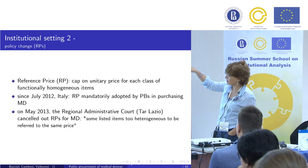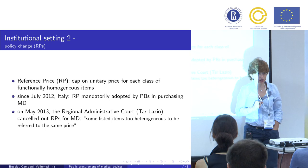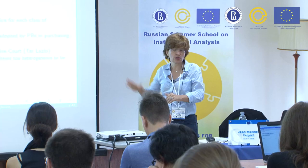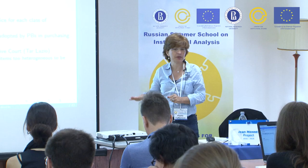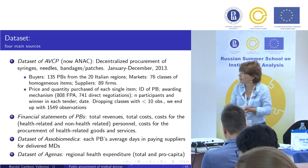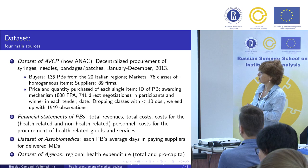The reference price policy is a cap on the unitary price for each class of functionally homogeneous items. Since the government observed large differences in prices, they put a cap so that every syringe everywhere in Italy could not cost more than a fixed amount to any public buyer. Our dataset comes from the Italian public procurement authority: we have data on syringes, needles, bandages and so forth, one year from January to December 2013.